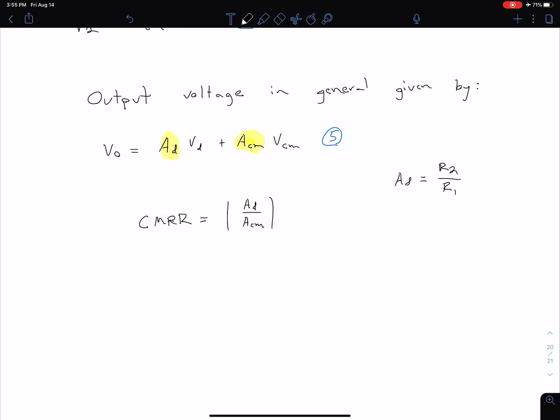Typically our differential gain is going to be pretty large and our common mode gain is going to be pretty small, so because of that oftentimes this common mode rejection ratio will be expressed in decibels. That's useful when we have really large numbers, so typically it's expressed in decibels which is just 20 log base 10 of that Ad over Acm.